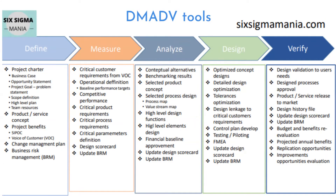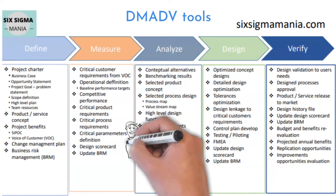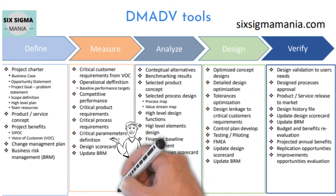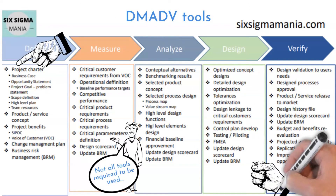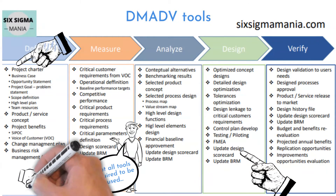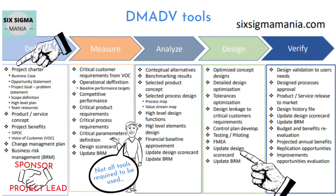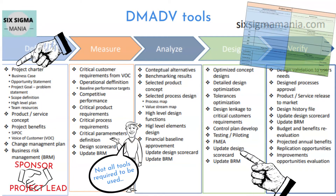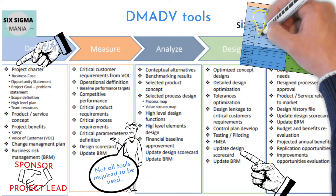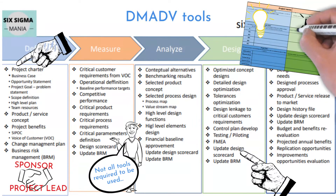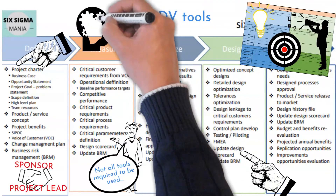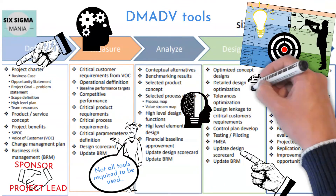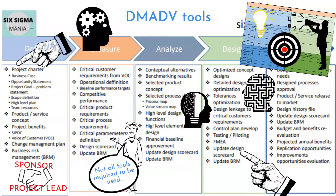Not all tools must be used in every DMADV project you run. Stop by each tool as you go through each project phase and think about how using that particular tool will be beneficial to the project and help reach the goal of delivering a new design. Make sure when you start, the project team leader is aligned with the project sponsor and the charter is properly written. Writing down discussed ideas and requirements in the project charter is important for a smooth run and will avoid potential misunderstandings from the sponsor, project leader, team, or stakeholders.